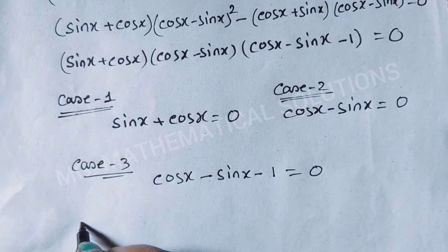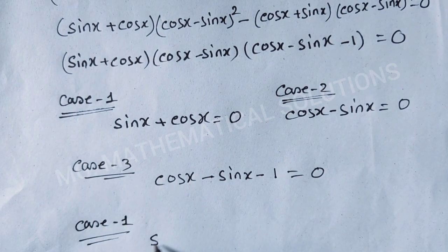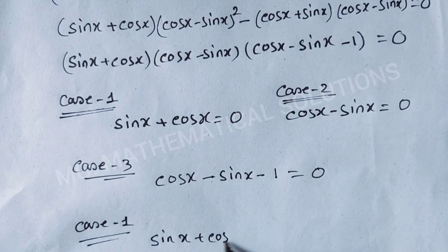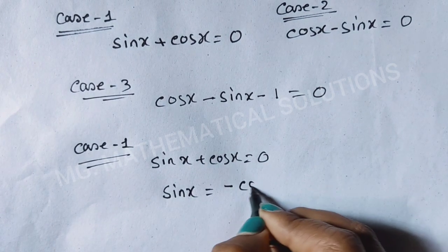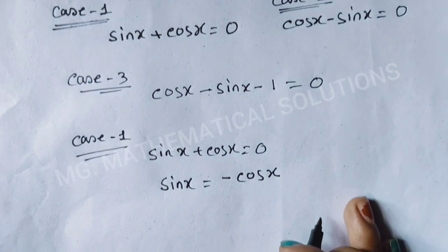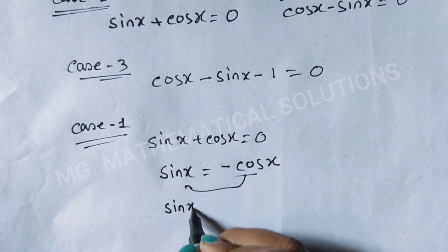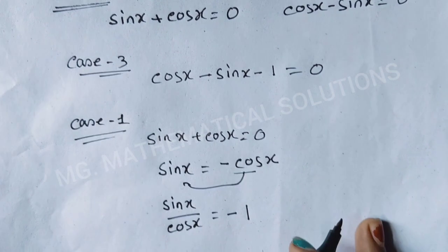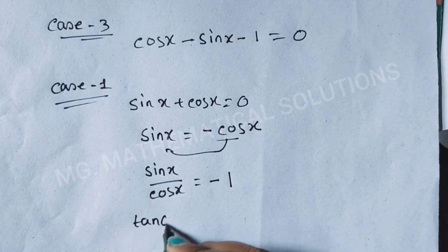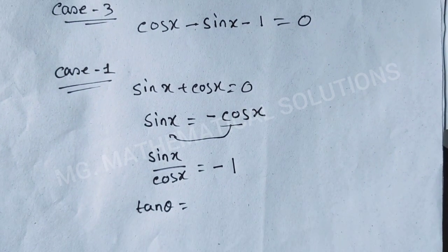First we solve Case 1: sin x + cos x = 0, so sin x = −cos x. Dividing both sides by cos x gives sin x / cos x = −1, so tan x = −1.